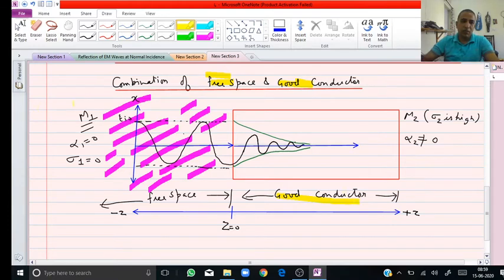Medium 1 is a free space here, so this means that alpha 1 will be 0 and sigma 1 will be 0. Because the sigma 1 of medium 1 is 0, this gives rise to alpha 1 equals 0.